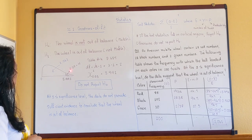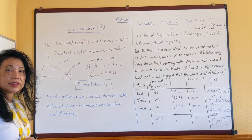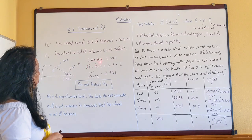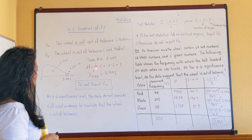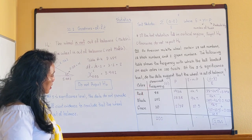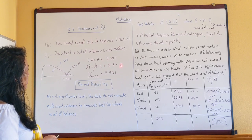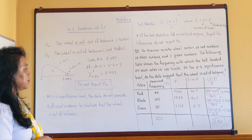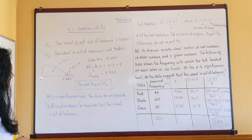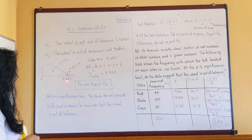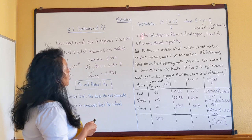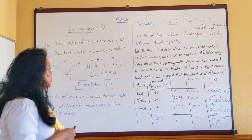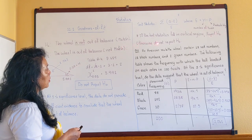It's a right-skewed, right-tail test. Alpha is five percent, so 0.05, and alpha is always the shaded area. We use Table A-4 on page 687. The degree of freedom is k minus 1. We have three categories — red, black, and green — so df equals 3 minus 1 equals 2. Looking up df = 2 and significance level 0.05 in the table gives a critical value of 5.991. The horizontal axis starts from 0, so 5.991 is our critical value boundary.